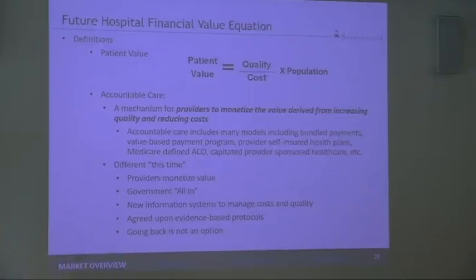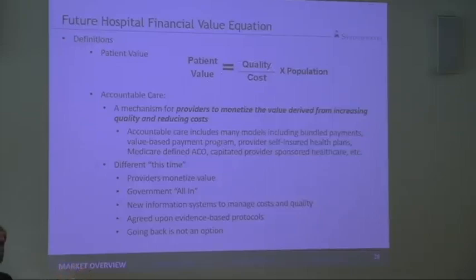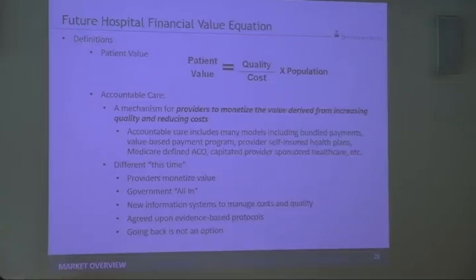Anything we do to increase quality improves patient value. Anything we do to reduce cost improves population value. Ultimately the goal is to improve quality, reduce cost applied to a population. This is the new world.